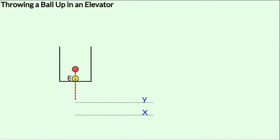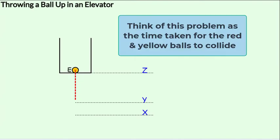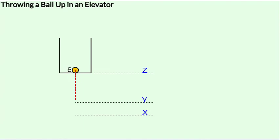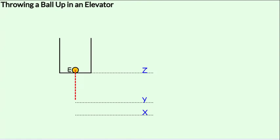To make the problem more familiar, similar to a problem we had solved earlier in this series, imagine that a yellow ball is stuck to the floor of the elevator. The yellow ball has the same upward acceleration as that of the elevator. We will use the concept of relative displacement, relative velocity, and relative acceleration between the red and yellow balls in order to compute the time of flight. This is very similar to a problem we had earlier solved — just the way it is framed is different.